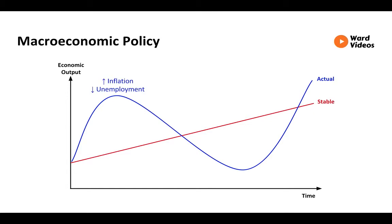During the upswing, there is rising inflation but falling unemployment. Then, during the downswing, there is falling inflation but increasing unemployment. Switching between rising and falling unemployment and inflation is bad for the economy. There is no confidence in the market because people don't know what will happen next. People won't spend because they are uncertain of their job in the near future.